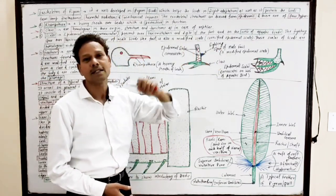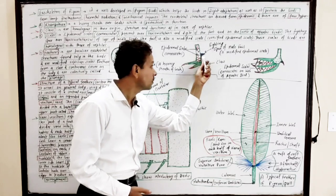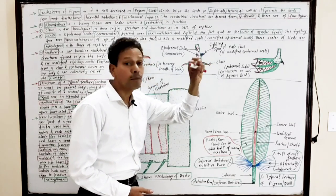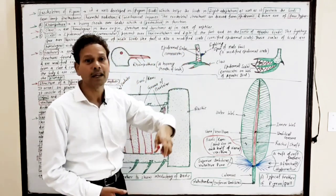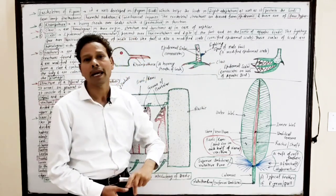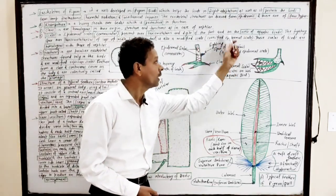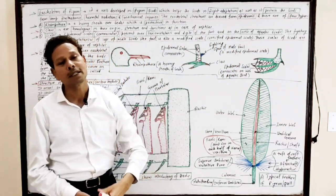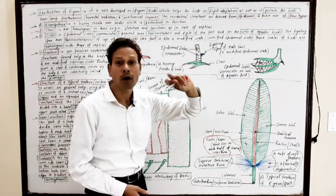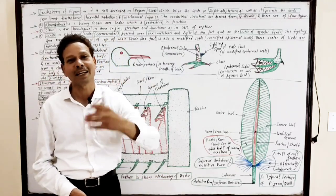In the case of fighting birds, like the male fowl, there is a modification which is a modified scale, and this structure is called a spur — S-P-U-R. This spur, found in male fighting birds like the male fowl, is a modification of the epidermal scale.